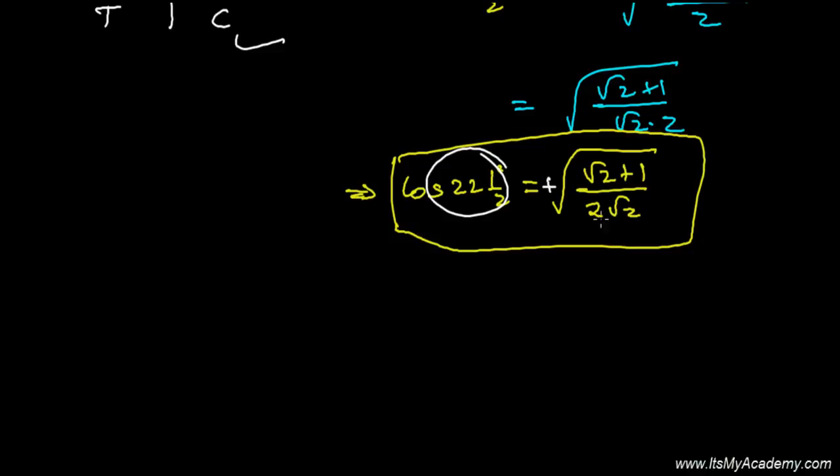We should find out the value of cosine of 22.5 degrees. Now let's try to find out the value of sine 22.5 degrees.